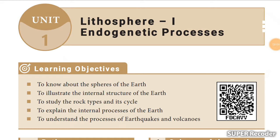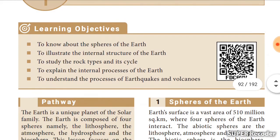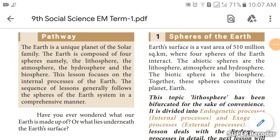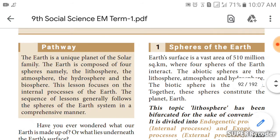Good morning children. I am Saspriya Ravi and I am going to take class for metric students, ninth standard geography. The first lesson is the lithosphere and endogenetic processes. The earth is like a sphere — a round ball shape. We are going to learn about the earth and the lithosphere. The earth is a unique planet in the solar system, also called the blue planet and our home planet.